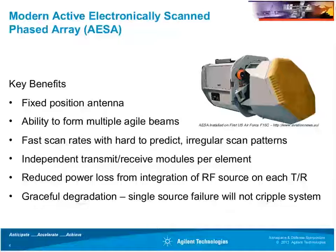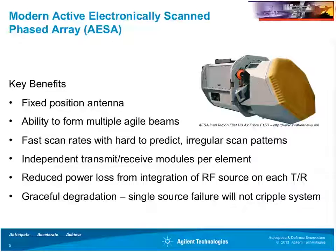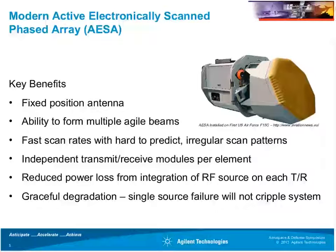The progression into modern active electronically scanned phased arrays was based on key benefits those systems could provide. One is that you remove some of the points of failure by having a fixed-position antenna — no longer is mechanical steering required, which definitely reduced failures from mechanical components. And as I mentioned, there's the ability to form multiple agile beams.